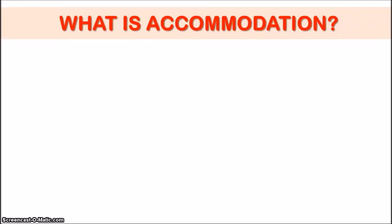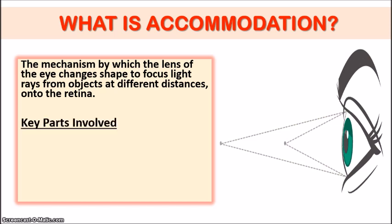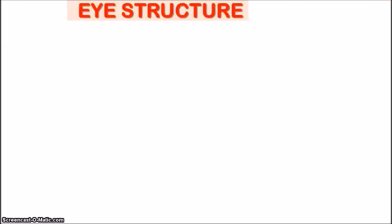So what exactly is accommodation? Accommodation is the mechanism by which the lens of our eyes changes shape to focus light rays from objects at different distances onto the retina. Now the key parts involved would be the lens, the ciliary muscles, the suspensory ligaments and the retina. But before you have an understanding of how these parts are involved in accommodation, it would make sense to look at the structure of the eye.